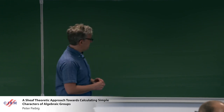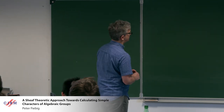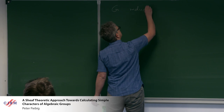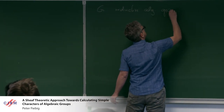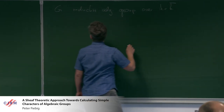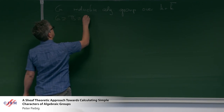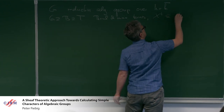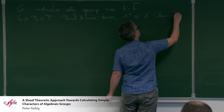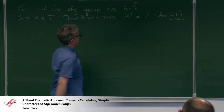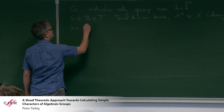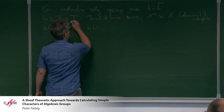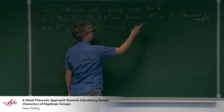I'm interested in a very classical problem: the characters of algebraic groups in positive characteristic. So let G be a reductive algebraic group over a field K, and fix the usual data — a Borel and a maximal torus. This gives us a set of dominant weights, the characters of the torus. It's a very well-established result that the simple representations are parametrized by the highest weight, which is a dominant weight.